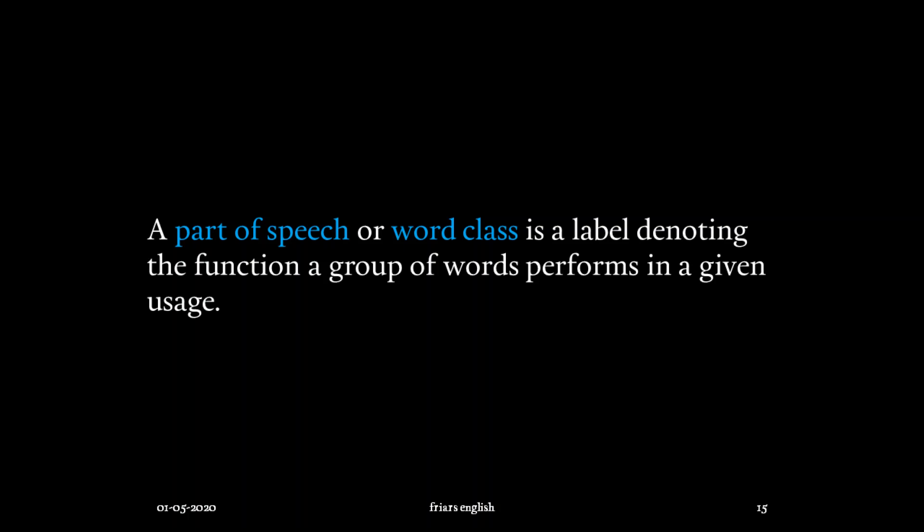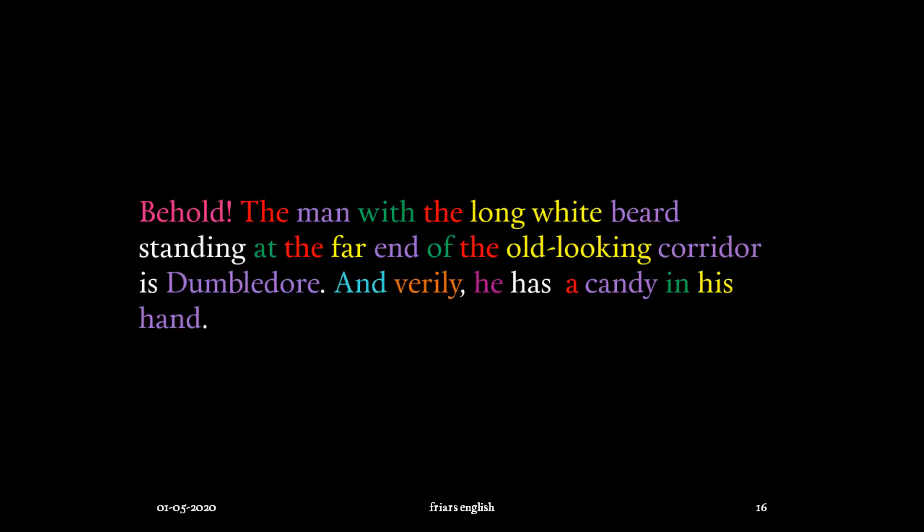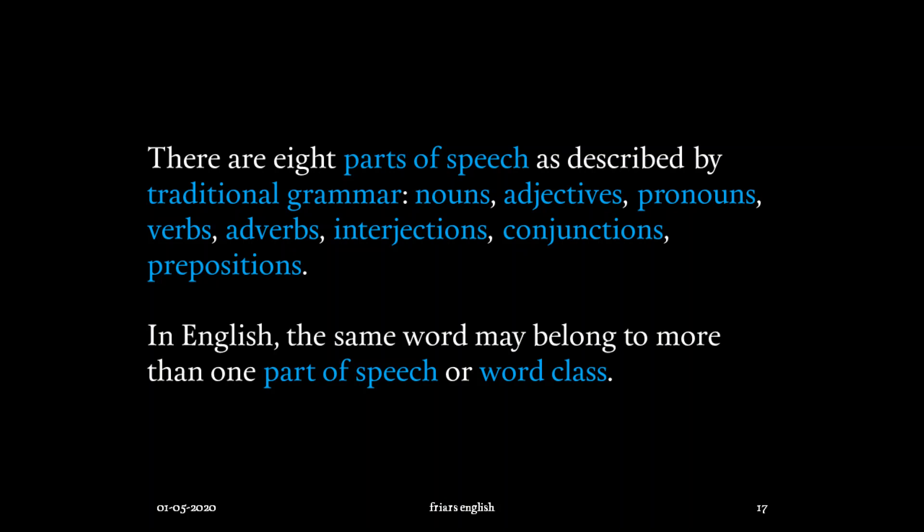The third kind of division we saw was into parts of speech. A part of speech or word class is a label denoting the function a group of words performs in a given usage. In English — and this is significant — the same word may belong to more than one part of speech or word class. Traditional grammar describes eight parts of speech: nouns, adjectives, pronouns, verbs, adverbs, interjections, conjunctions, and prepositions.